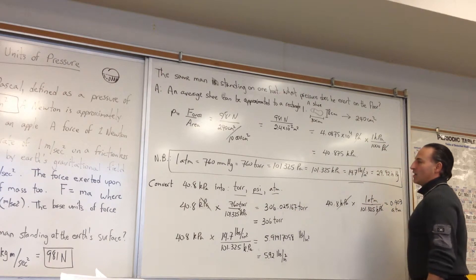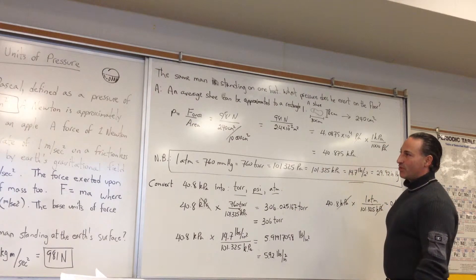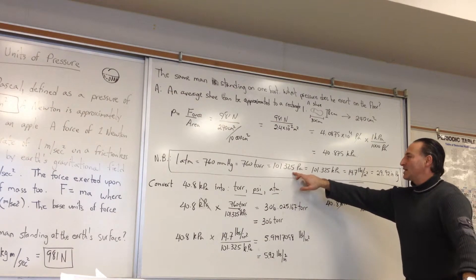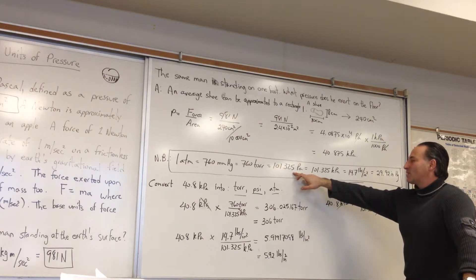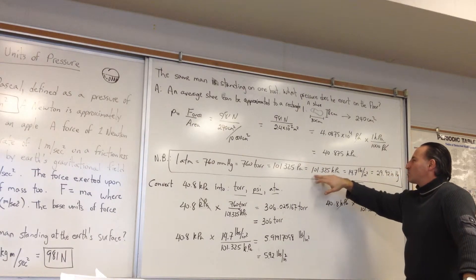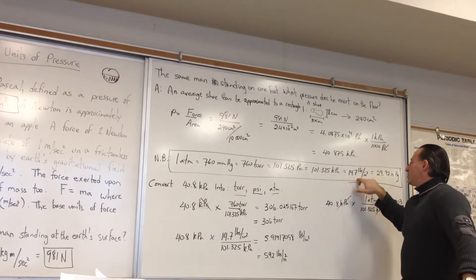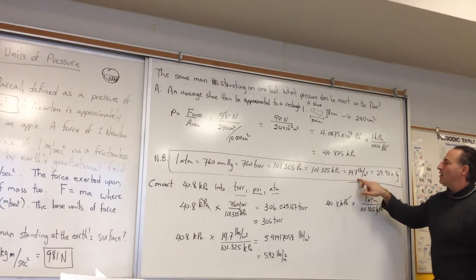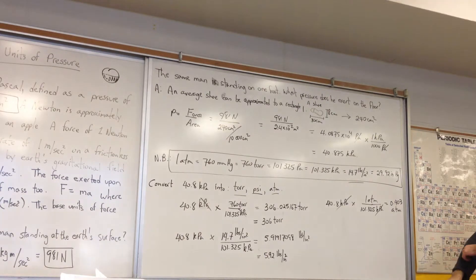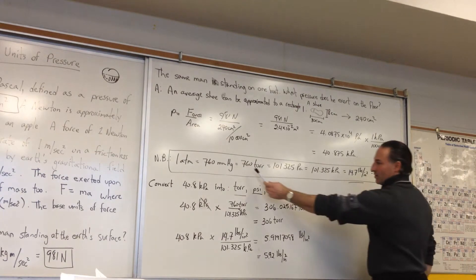The Pascal is a pressure of one newton distributed over an area of one meter squared — it is a very small unit. So 101,325 pascals equals one atmosphere. In kilopascals, that's 101.325. That is equal to 14.7 pounds per square inch, or enough pressure to raise a column of mercury 29.92 inches, which is the same as 76 centimeters.